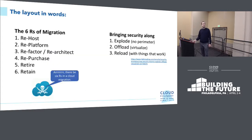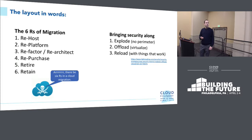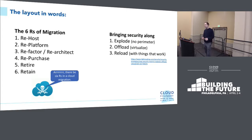They broke those layouts into what they call the six R's of a migration: re-host, re-platform, re-factor, re-purchase, retire, and retain. In the security industry, Edward Amoroso broke it down into three mechanisms: explode — recognize that there's no perimeter; offload — essentially virtualize it or get things off specific hosts; and then reload — continually take those things and aspects that work.